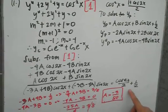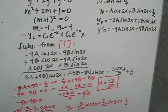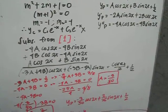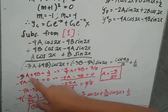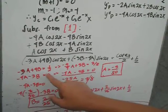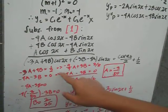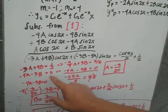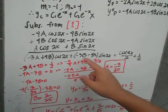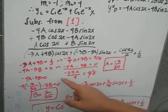From this, we get the system: negative 3a plus 4b is equal to one half, and negative 4a minus 3b is equal to 0.